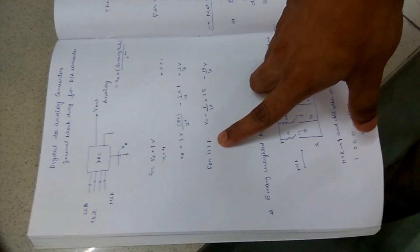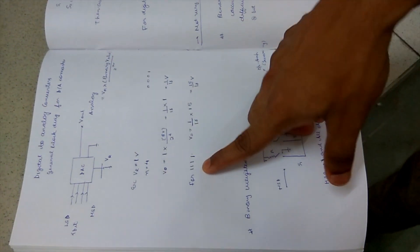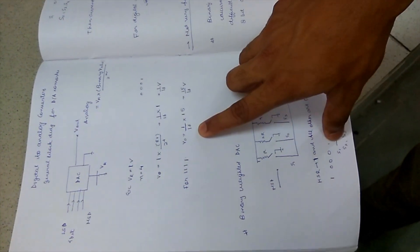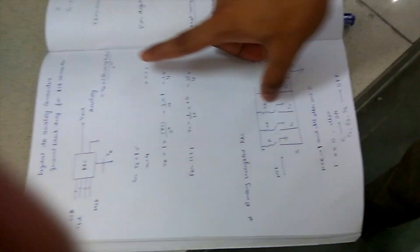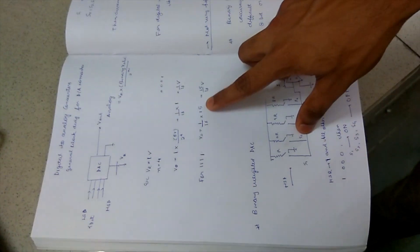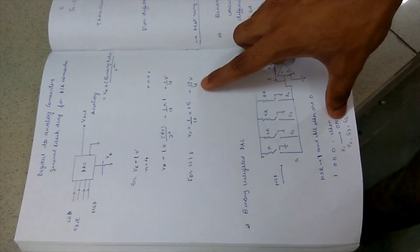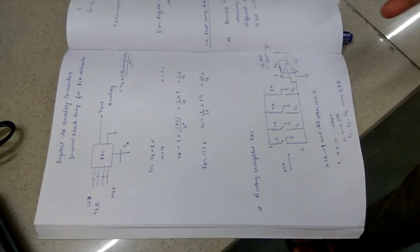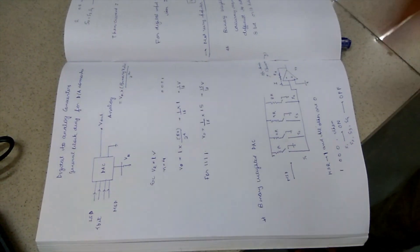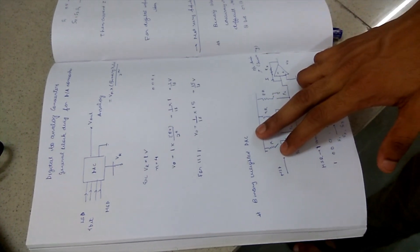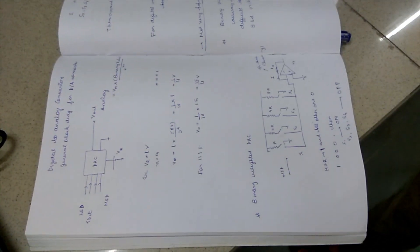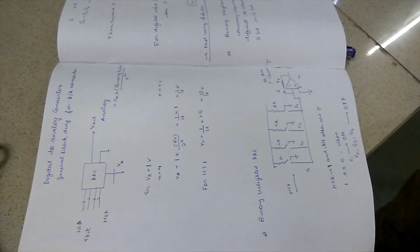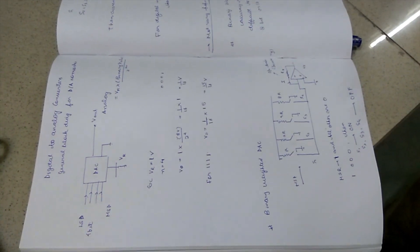If we take input digital signal 1111, the binary value becomes 15 and the output becomes 15 by 16 voltage. Digital-to-analog converters are of two types: the binary-weighted digital-to-analog converter and the R2R digital-to-analog converter. Generally, the R2R digital-to-analog converter is used in all kits. But here, I will explain both types.